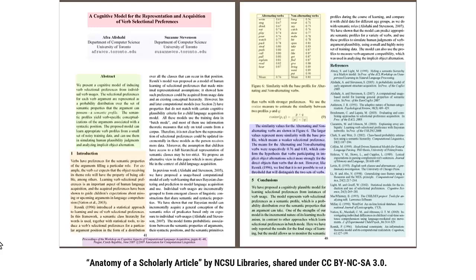Understanding how scholarly sources work can save you time and effort. This diagram shows the common components of scholarly articles: title, author, abstract, introduction or literature review, methodology, research results, discussion, conclusion, and references. These components are often labeled with section headings, but not always. When reading, especially for synthesis, you should start with the abstract, introduction, and conclusion, looking for the content and main points the authors want you to learn. These are good places to start looking for the main ideas that you might want to talk about in your paper.